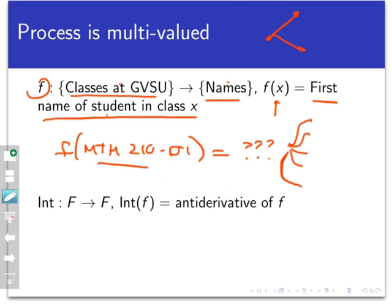Another more technical example is this one. Define the process INT that goes from F to F. Here, F is the set of all functions from the real numbers to themselves. We saw this in an earlier screencast about calculus, and INT of F is going to be an anti-derivative of F. So the problem with this process is that it's multiple-valued. For example, INT of X squared has not just one, but many different outputs.